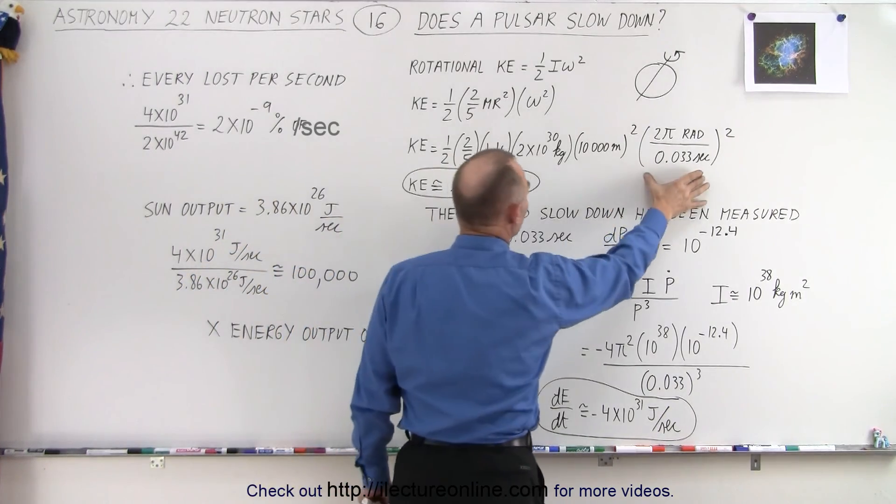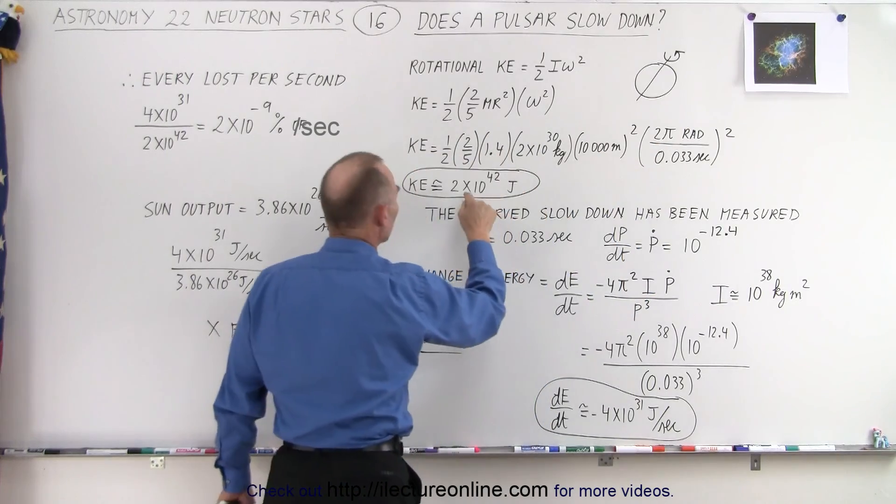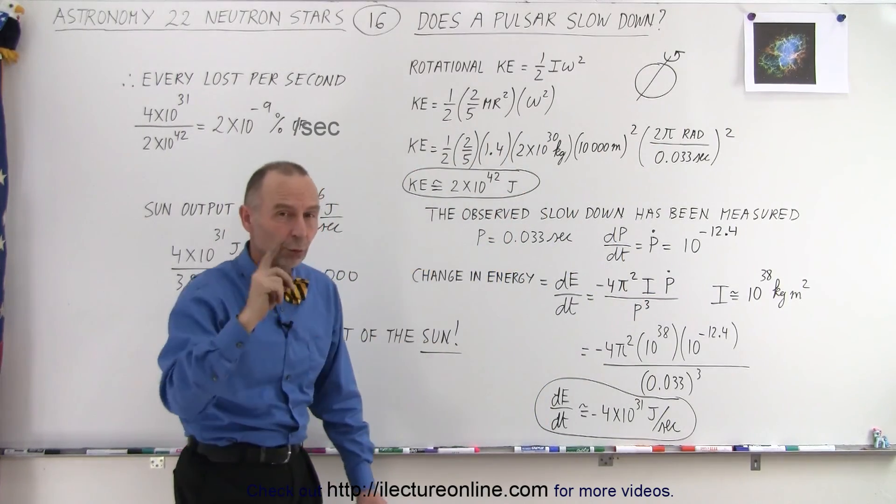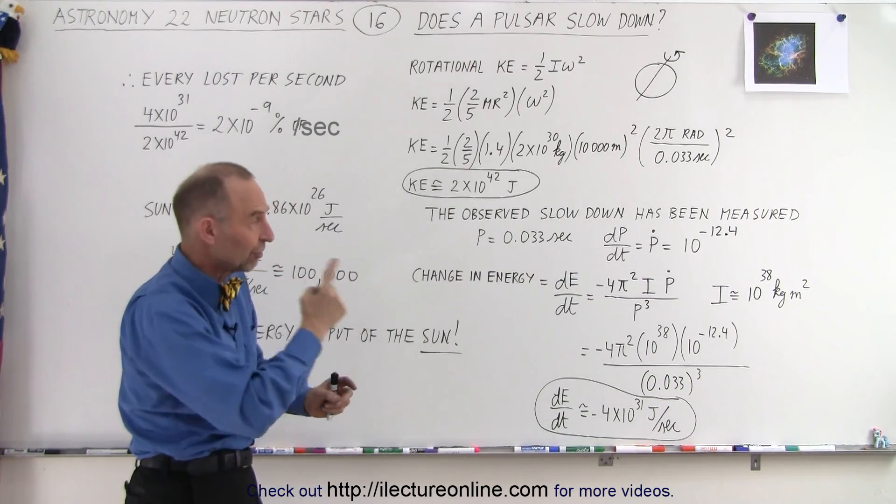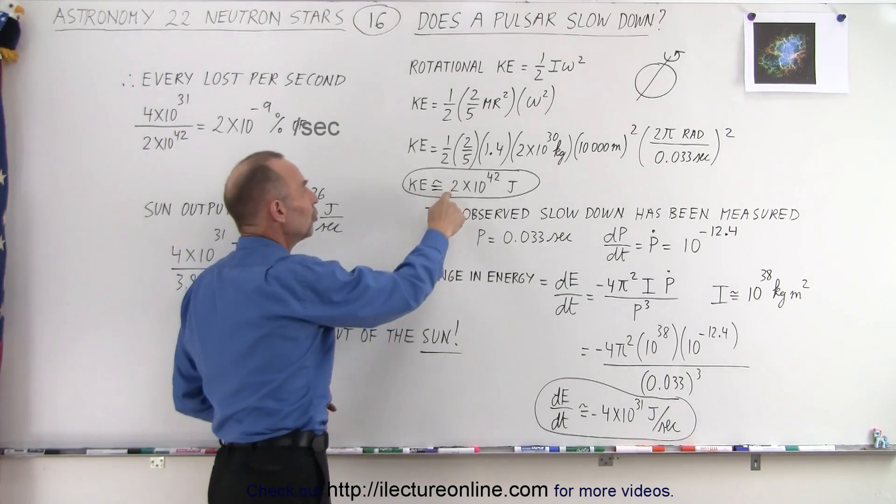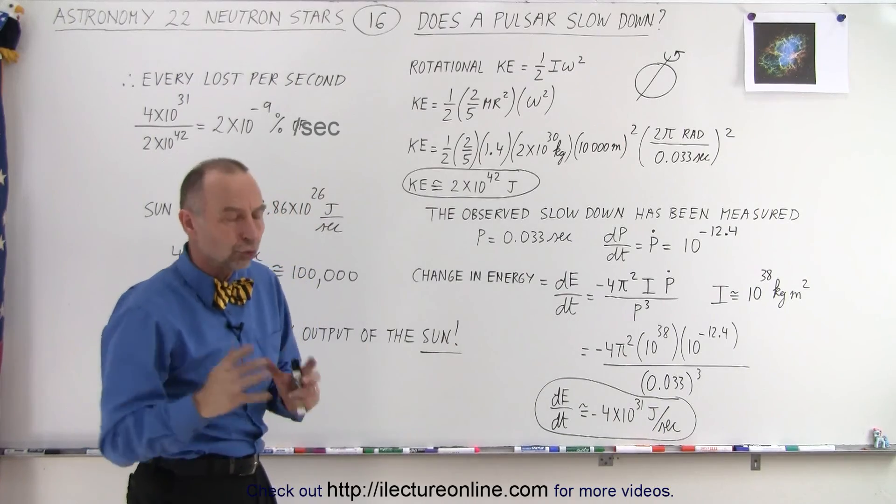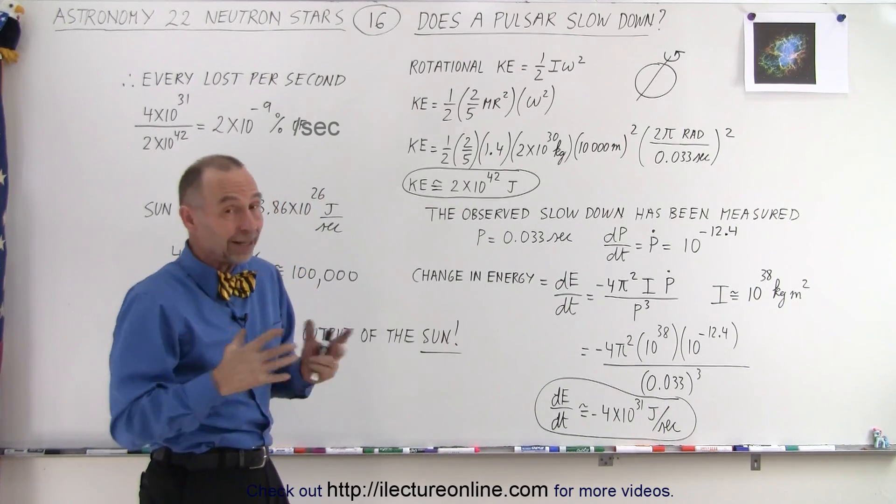We have to square that ratio. We multiply everything out. We realize that the kinetic energy, the rotational energy, the energy that the pulsar has because of its rotation, its very rapid rotation, is 2 times 10 to the 42 joules. That's a lot of energy.